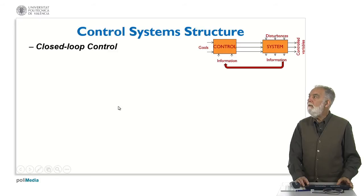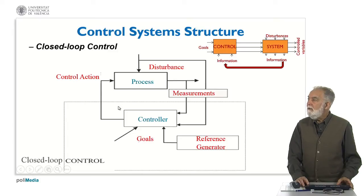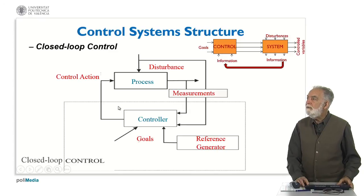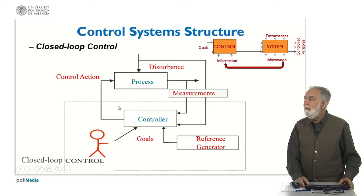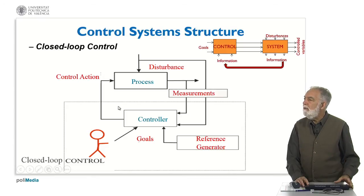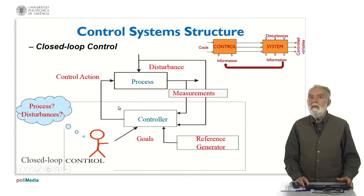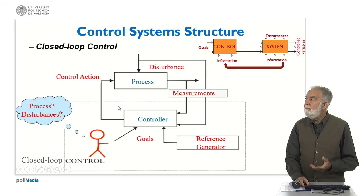If we close the loop, then we have a basic closed loop system. Closing the loop can be because we are measuring the input disturbances, or we are also measuring the process. Based on this idea we can generate different control structures. In that case, the operator is just introducing the goals to the system, and the reference is produced externally — either coming from another subsystem or fixed by the operator beforehand. The operator doesn't need to have a good knowledge of the process or know about the disturbances. The controller is measuring the disturbances and the outputs, and generating the control action according to the goals.